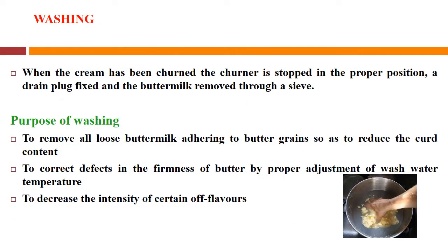After churning the next step is washing. When the cream has been churned, the churner is stopped in the proper position, a drain plug fixed, and the buttermilk removed through a sieve. The purpose of washing is to remove all loose buttermilk adhering to butter grains so as to reduce curd content, to correct defects in the firmness of butter by adjusting wash water temperature, and to decrease the intensity of certain off-flavors due to acidity.